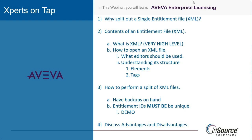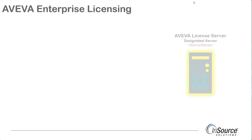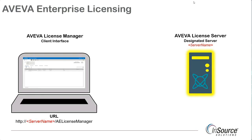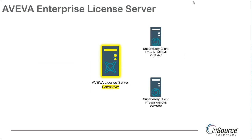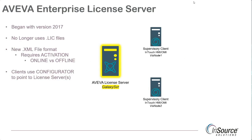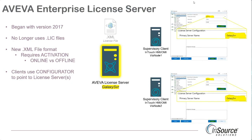We'll get into the advantages and disadvantages towards the end. As a recap, we have a concept called a license server — that's where we install our XML files, but we do it through the interface of its License Manager. License Manager is somewhat similar to the IDE; it is your interface to your license server, much like the IDE is your interface into the Galaxy repository. The license server concept came about in 2017. We no longer use .LIC files, and our clients need to make sure that they point using Configurator to the license server. The license server will contain an XML file that needs to be activated.